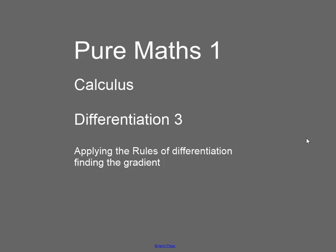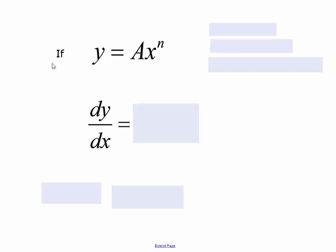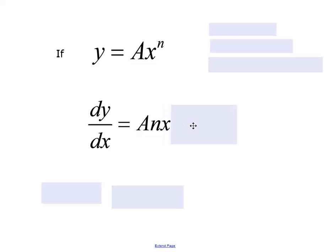In this video, we're going to have a look at how to apply the rules of differentiation and how to find the gradient at a point on the curve. Let's just review the general rule for differentiation: if we've got a function y equals some constant a times x to the power n, then dy/dx is equal to a times n times x to the power n minus 1. So that's our general rule.